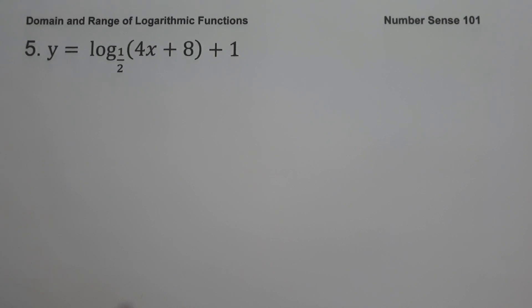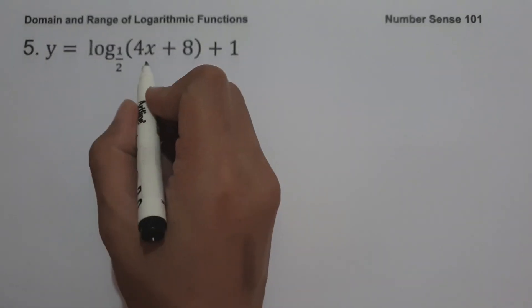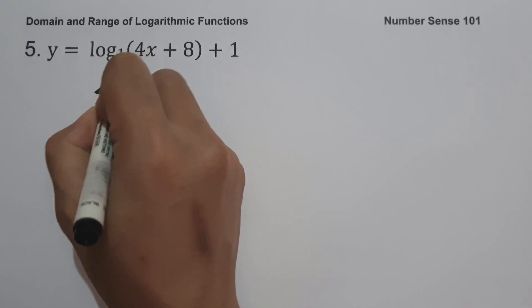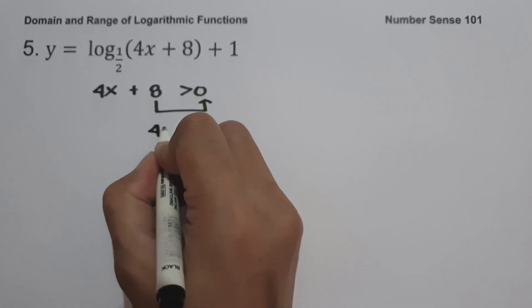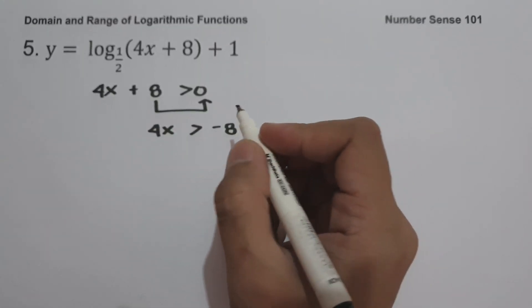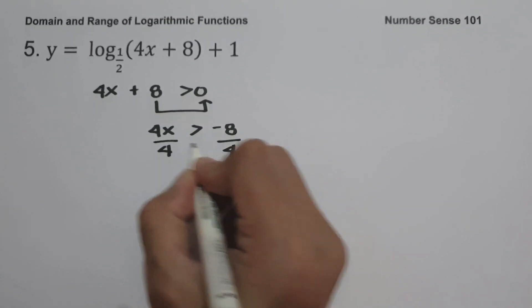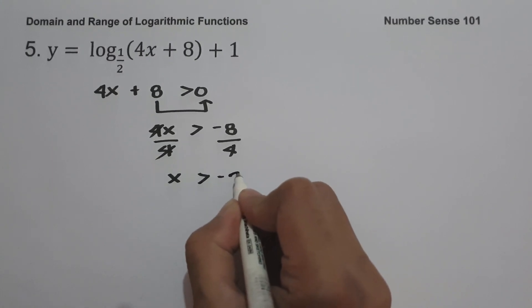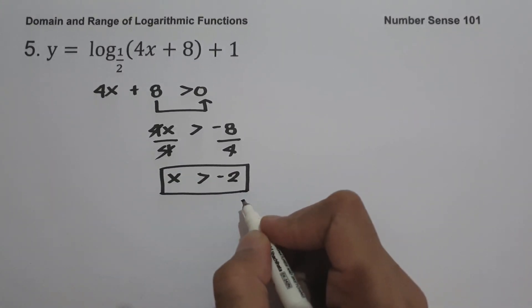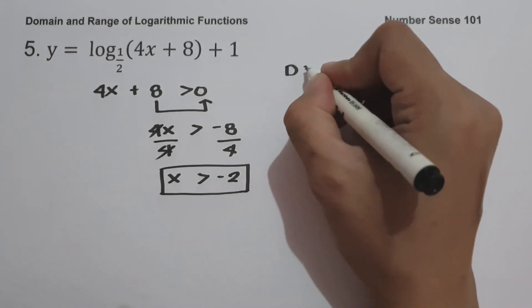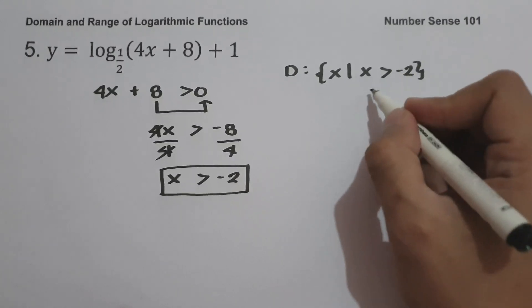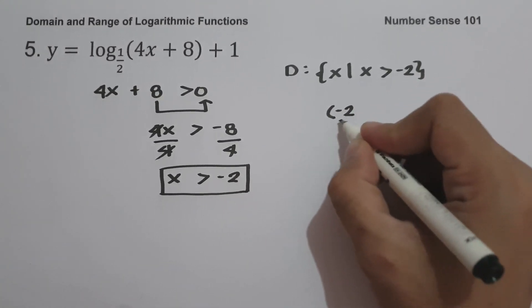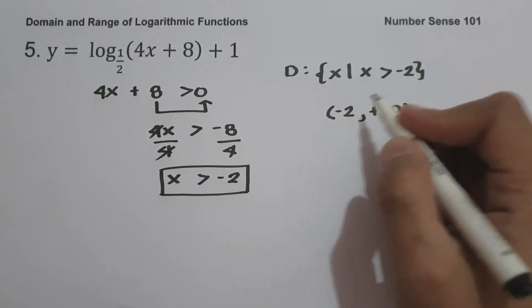Example number five: y equals log base (1/2) of (4x plus 8) plus 1. To find the domain, let us equate our argument greater than zero: 4x plus 8 greater than zero. Moving 8 to the other side gives 4x greater than negative 8. Dividing both sides by 4 gives x greater than negative 2. In set builder notation: the domain is the set of x values such that x is greater than negative 2. In interval notation: from negative 2 (not included) up to positive infinity. This will be the domain.